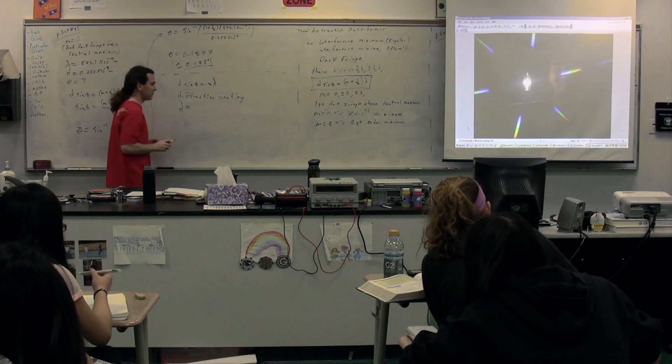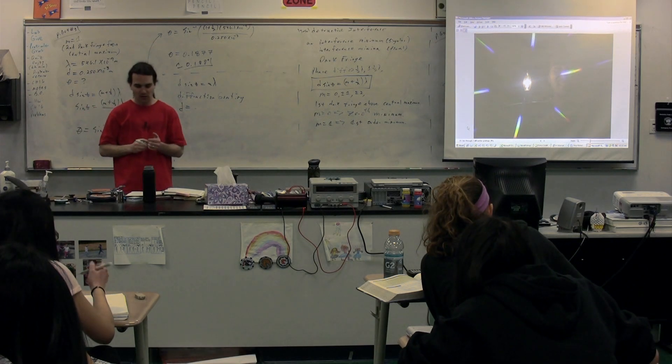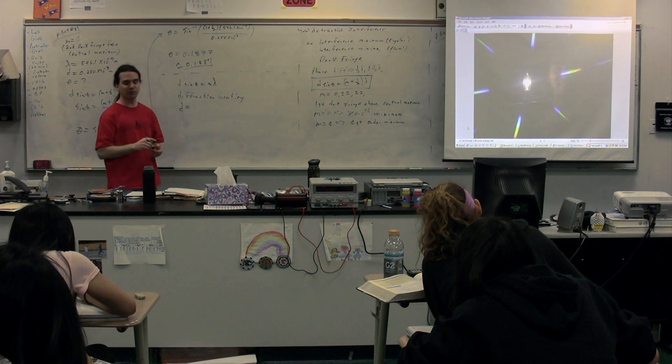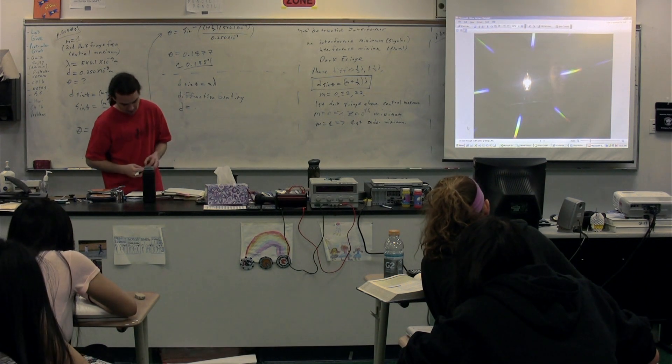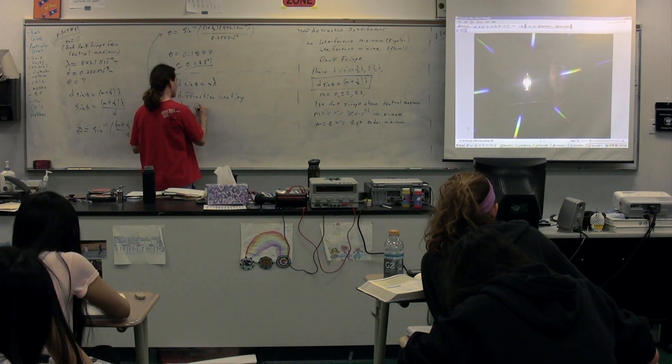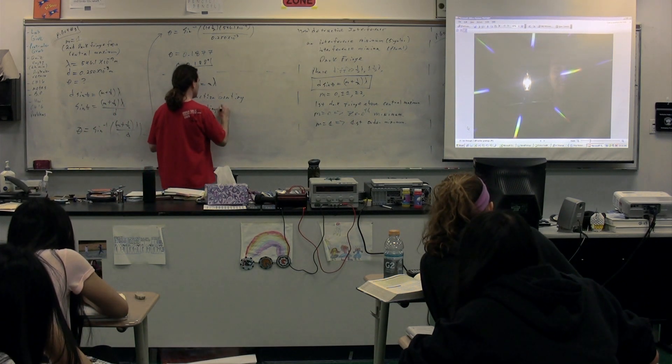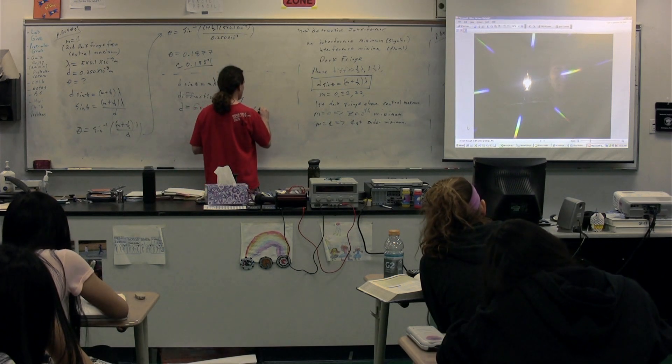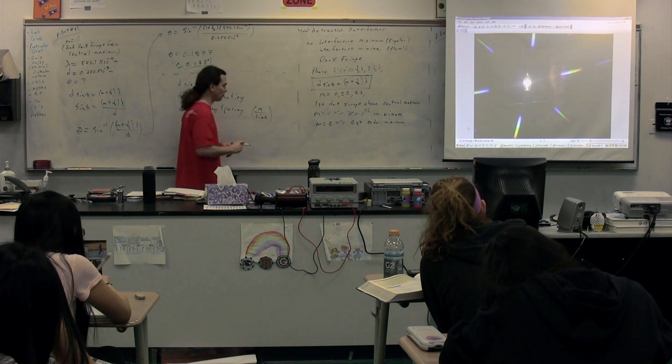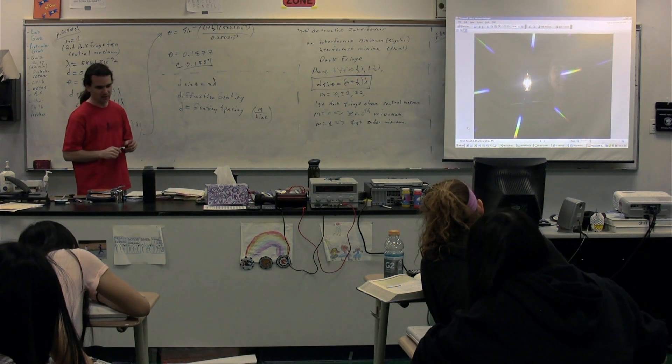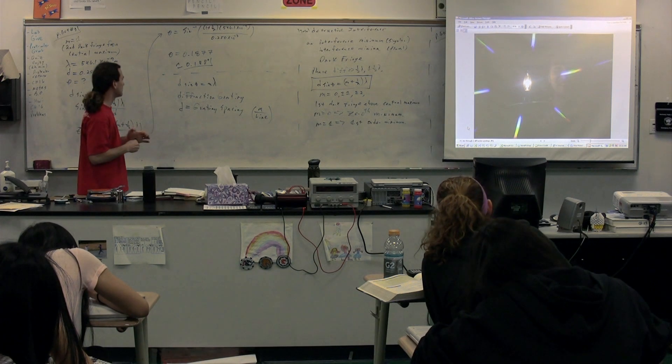Now, d is slightly different in that this was the slit separation for a double slit experiment. But for d, for a diffraction gradient, it's actually technically called the grating spacing, which would be the meters per line, the grating spacing. This would be the distance between the different lines, which would be meters per line.